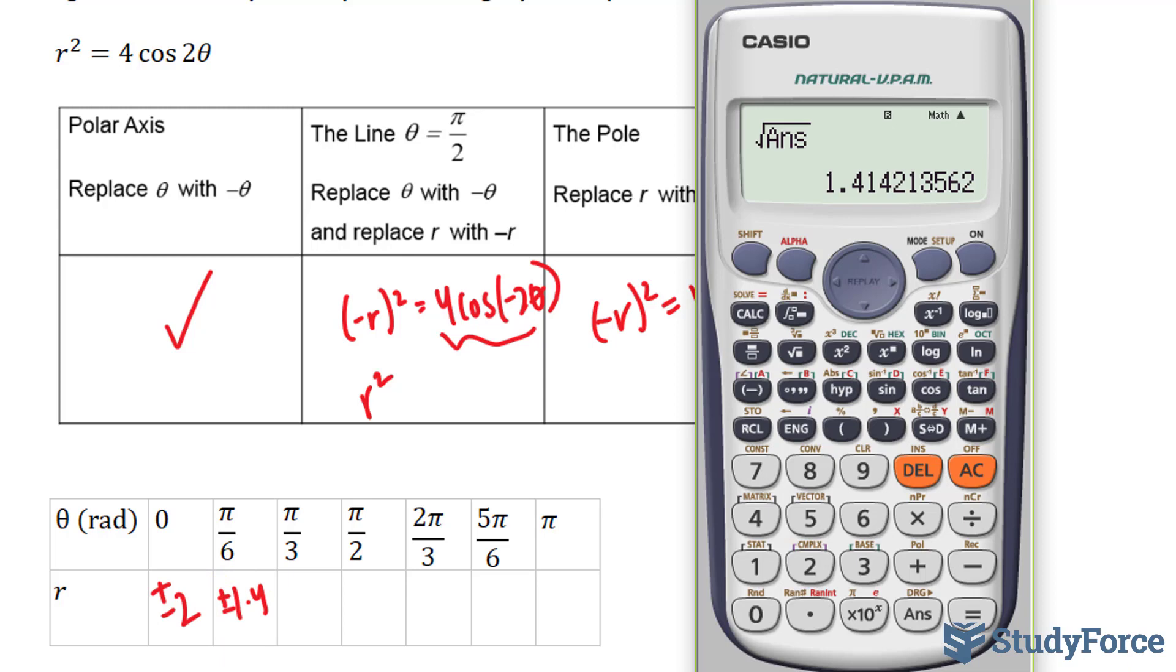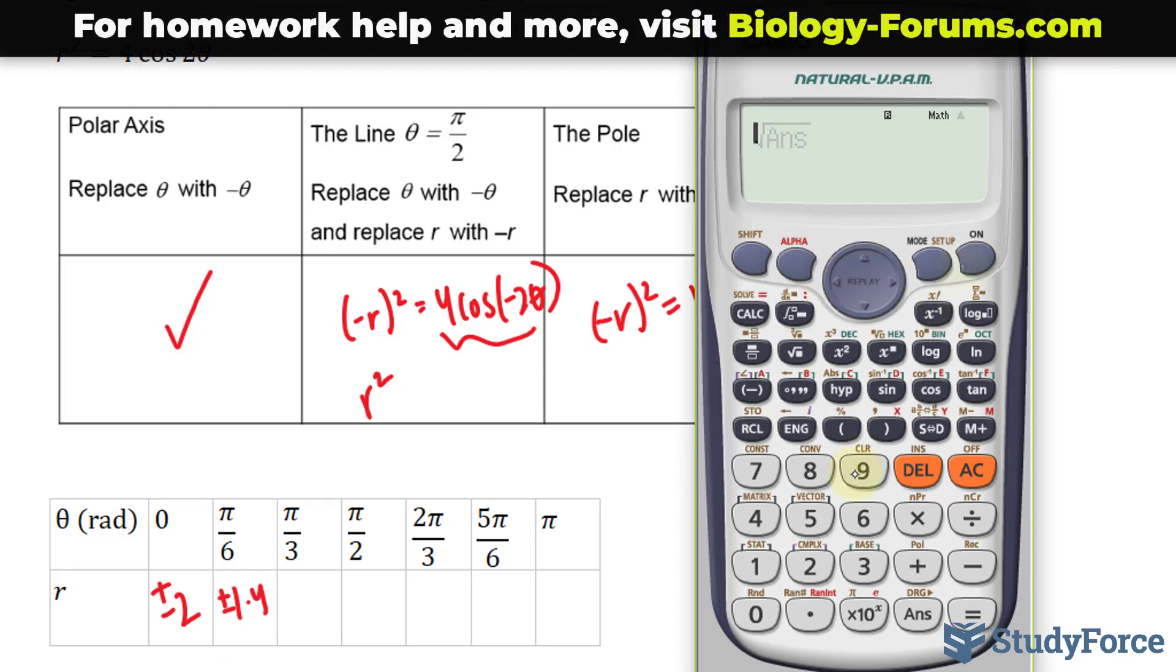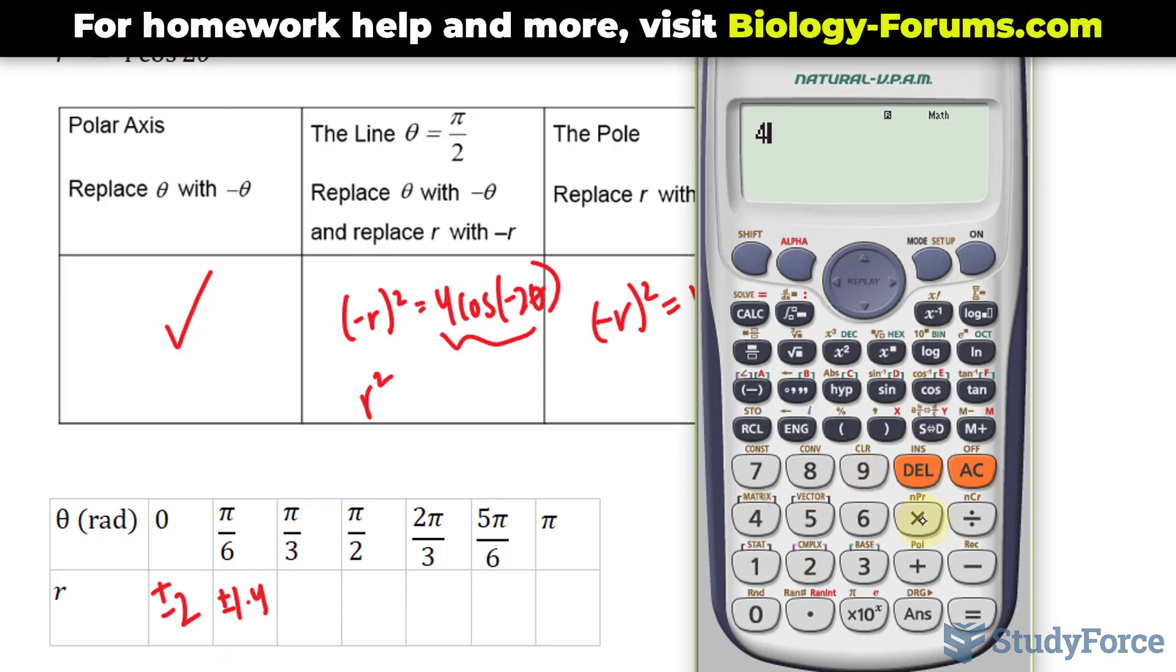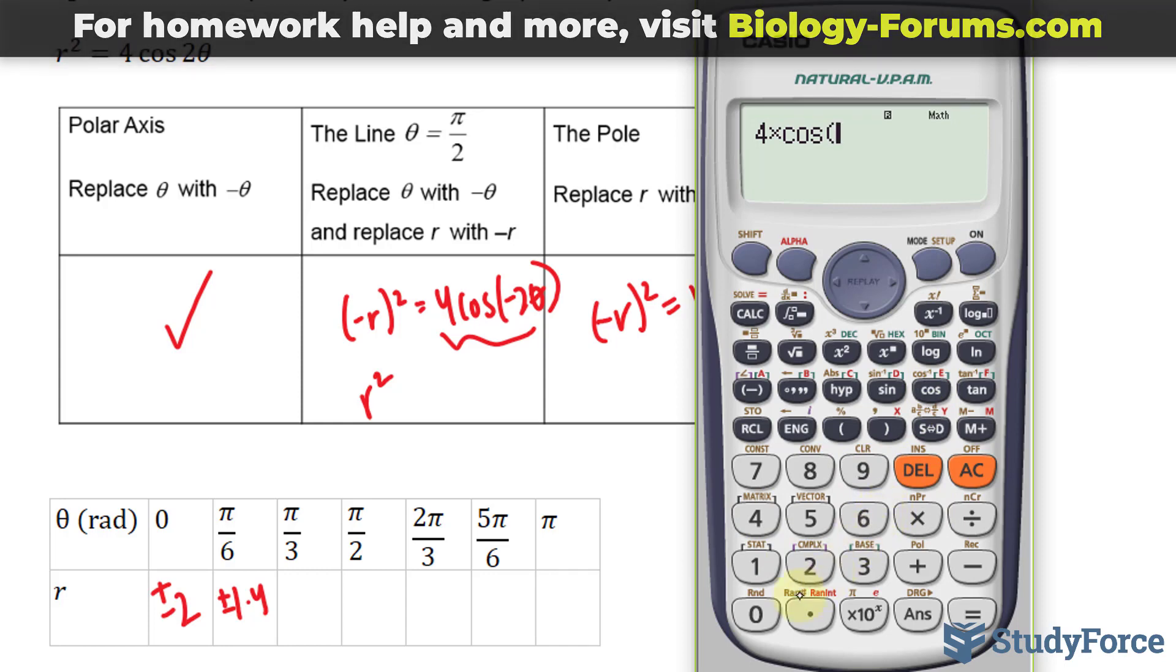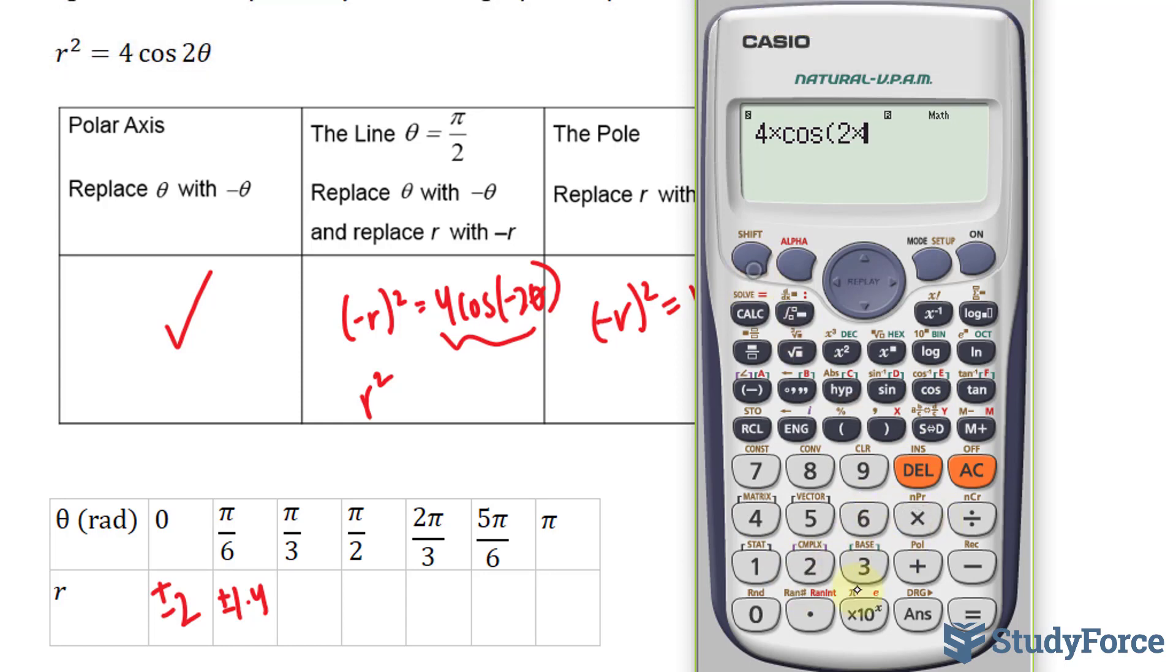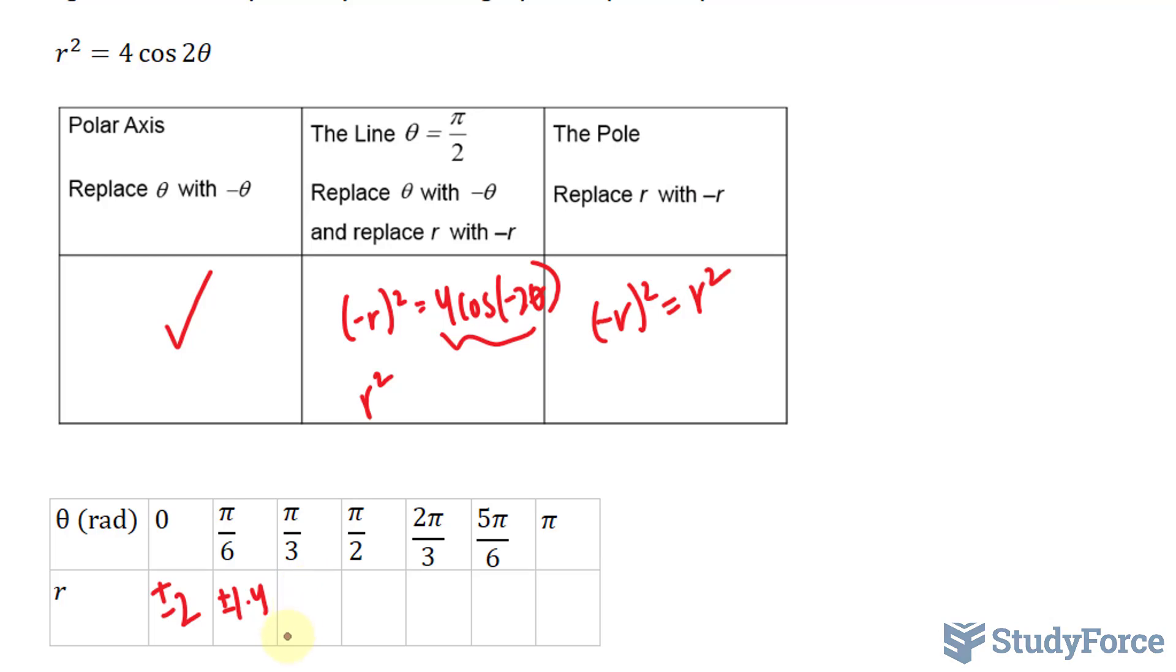Let's see what happens at pi over 3. 4 times cosine 2 times pi over 3, and we get negative 2. You can't square root a negative number and get real values, so it does not exist here. And the same case with this one and this one, and you can prove that with your calculator.